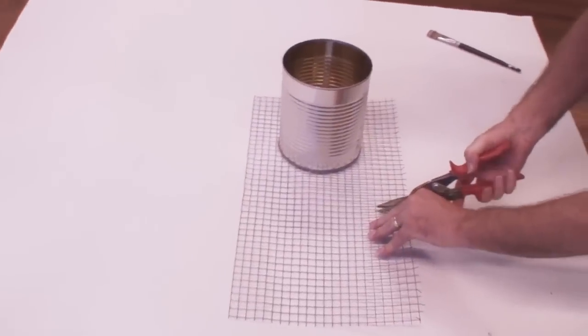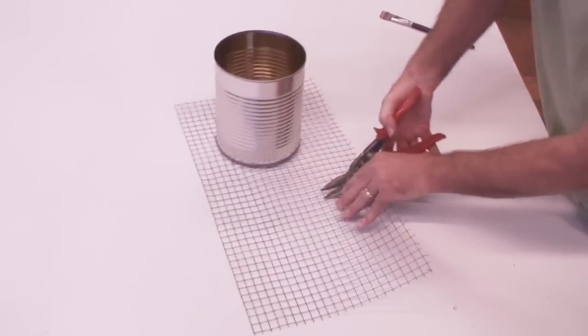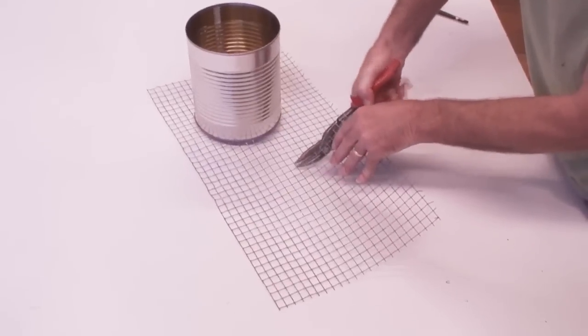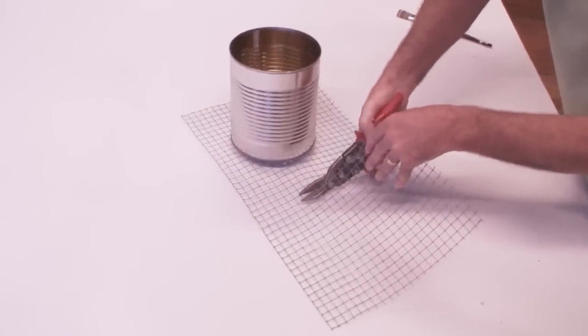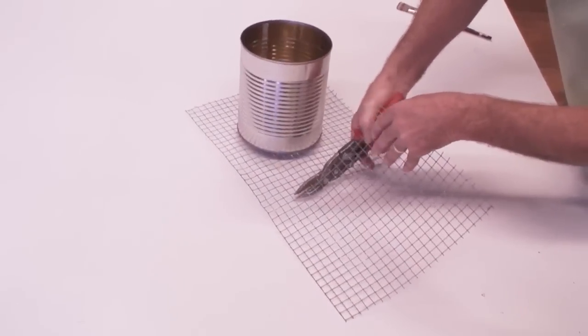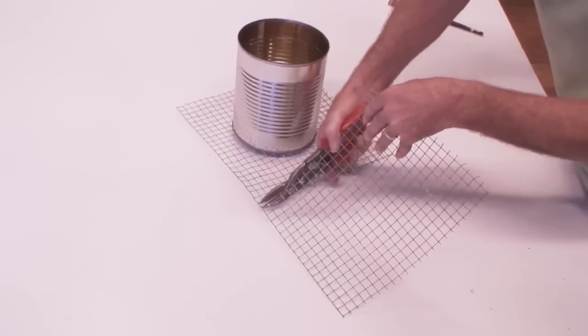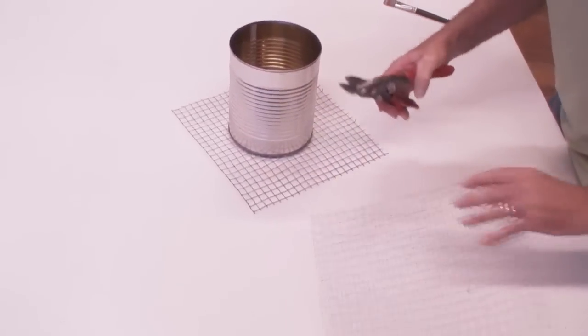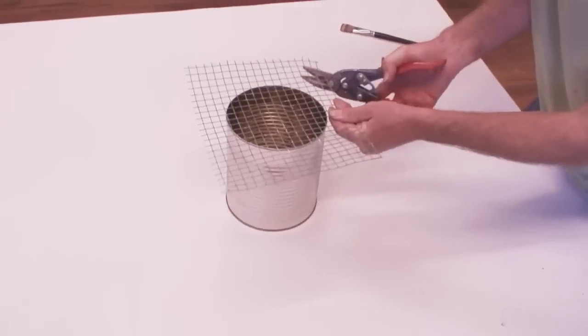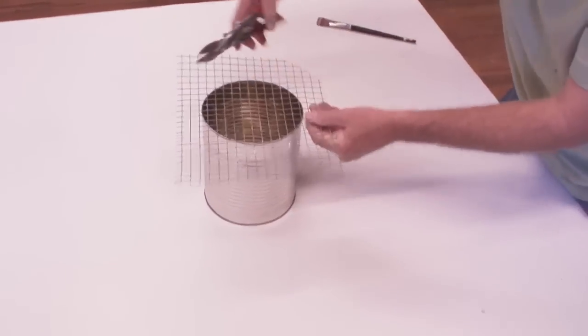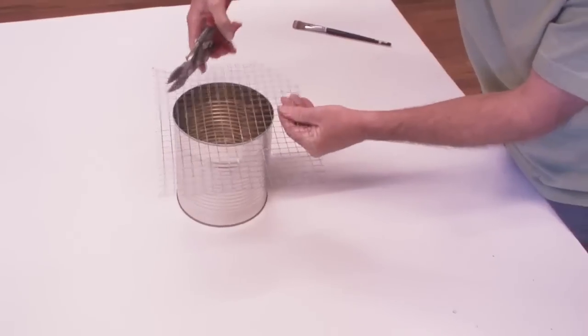is measure the bird screen. Cut your screen about two to three inches bigger all the way around the can. You probably should be wearing gloves with this. You have to be extra careful with this metal because it can cut your finger or hand. Now we'll cut the corners off of the screen at about a 45-degree angle.